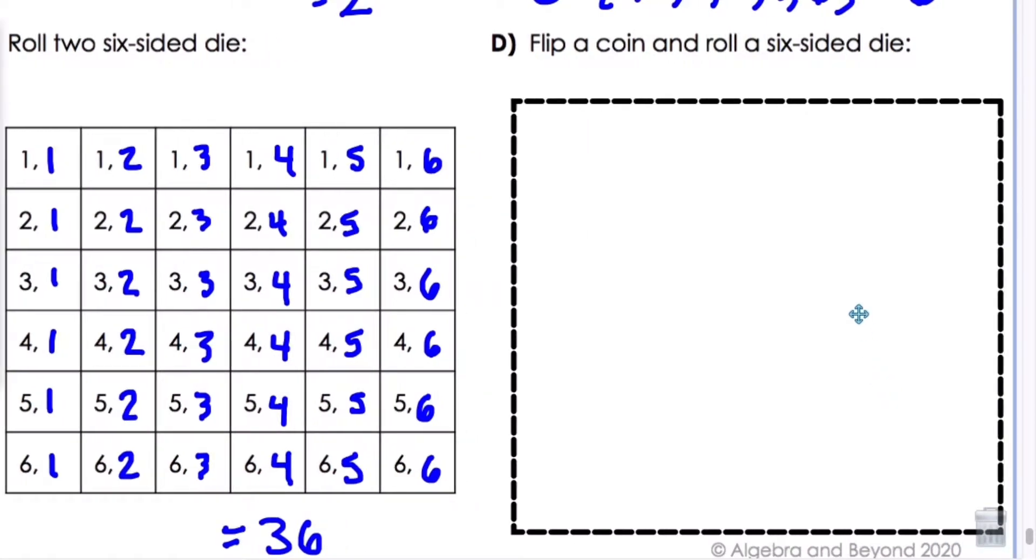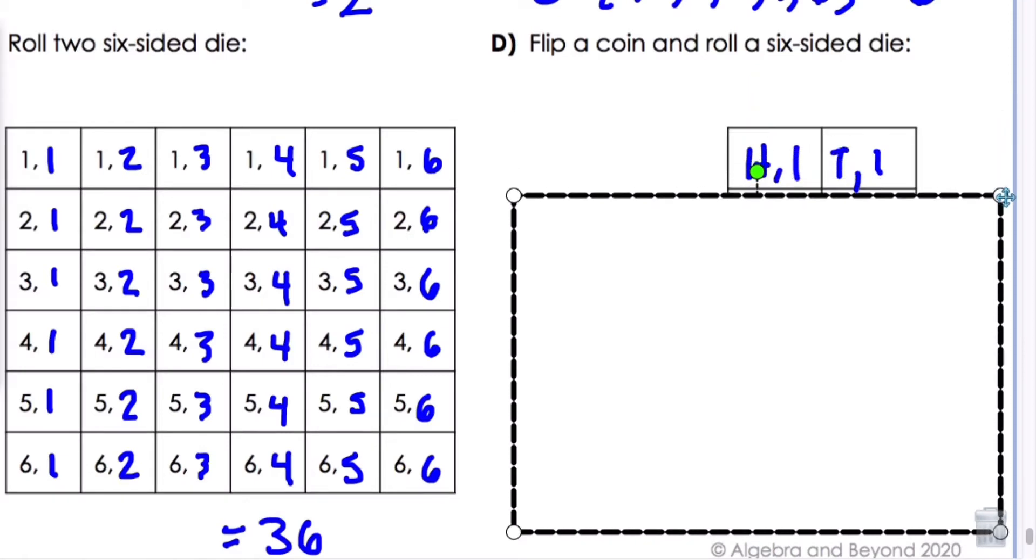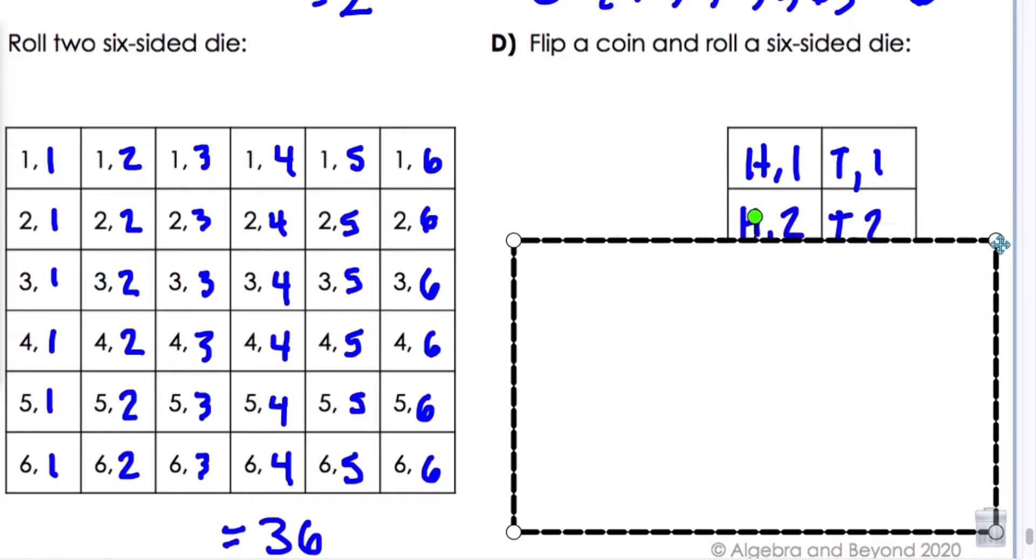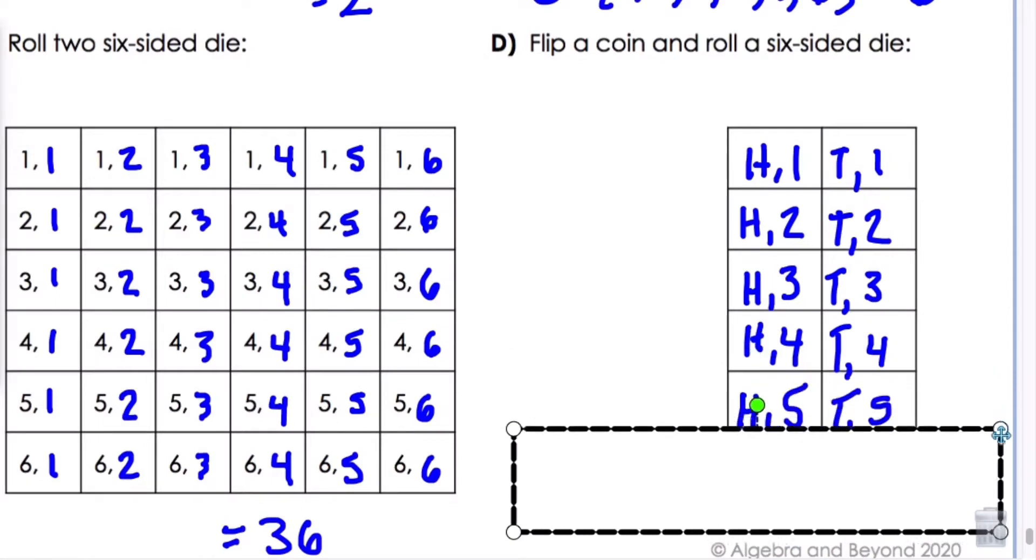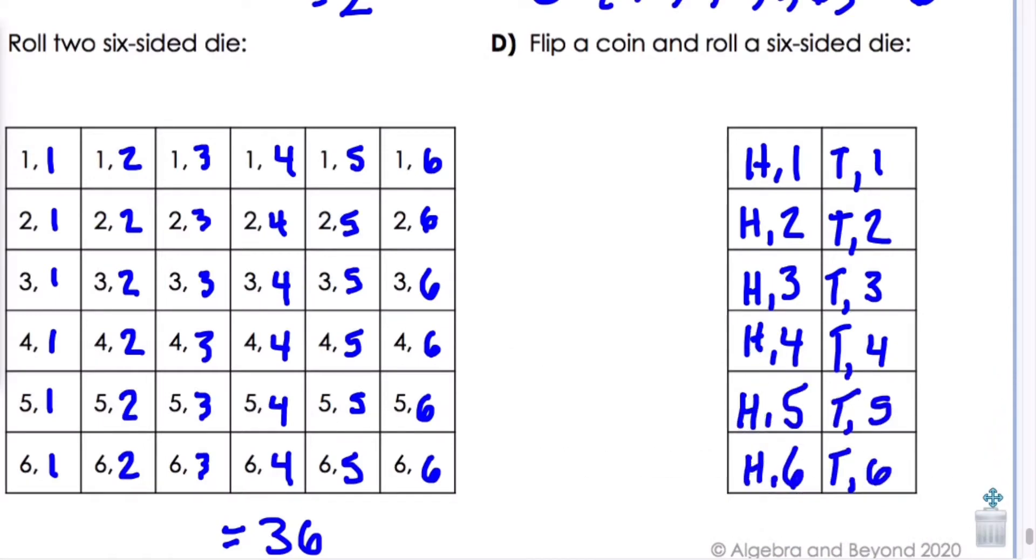Letter D, flipping a coin and rolling a six-sided die. Let's look at our scenarios. We could have heads and one, tails and one, heads and two, tails and two, and so forth. Heads and tails with each number. So we know that our sample space in this case would be 12. It's important to find your sample space before doing any probability.